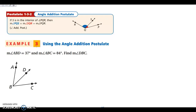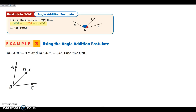The next thing we're going to look at is our angle addition postulate. It is just like the segment addition postulate that we did in section 1-2. Basically, all it says is that we can add angles together. I can take my blue angle, add to it the red angle, and get the angle measure of the entire thing. The thing I want you to focus on is being able to set up your equation.